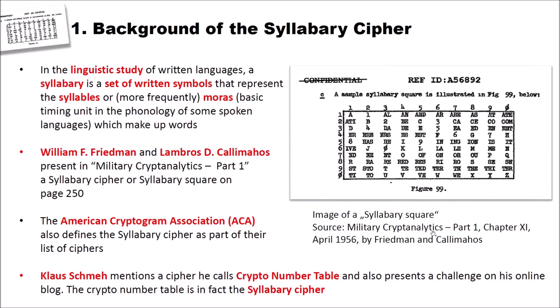You will find it on the NSA's web page. William Friedman and Lambros Callimahos present in that book a syllabary cipher or syllabary square that you can see here on the right side on page 250 of the book. The American Cryptogram Association (ACA) also defines the syllabary cipher as part of their list of ciphers. I came in touch with this cipher when I read a blog post of Klaus Schmeh, who's a friend of this channel and a crypto blogger and crypto author. Klaus Schmeh mentions a cipher that he at that time calls the Crypto Number Table and also presents a challenge on his online blog. So if you're interested in solving such a challenge, you should have a look at Klaus' blog. The crypto number table that Klaus presents on his blog is in fact also the syllabary cipher.